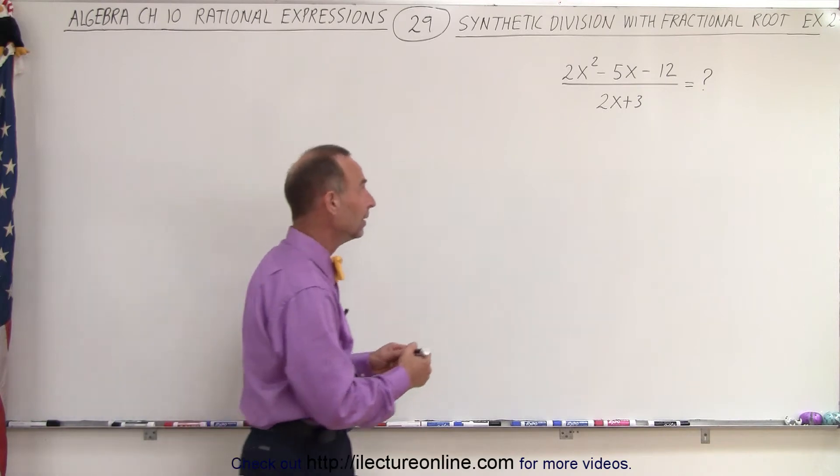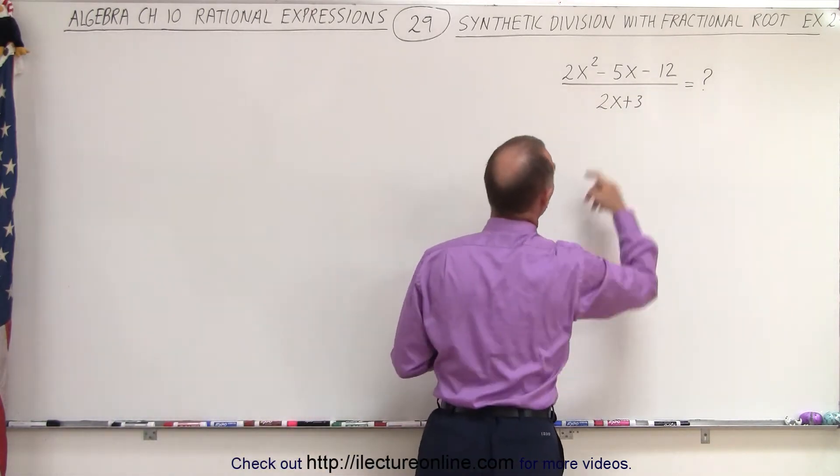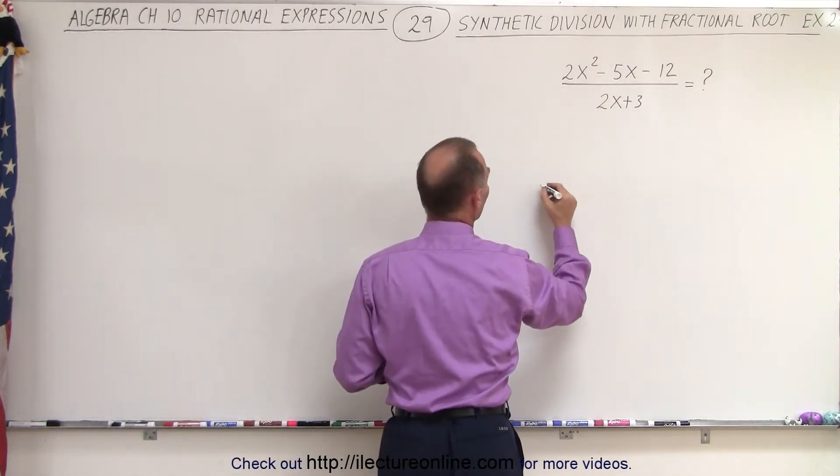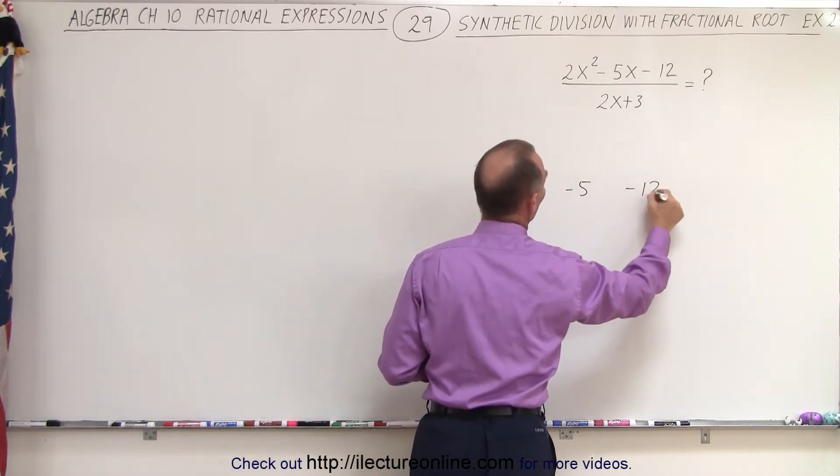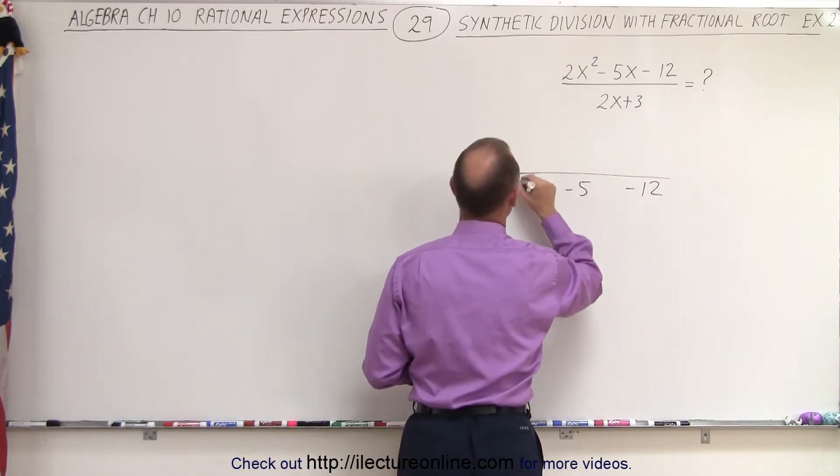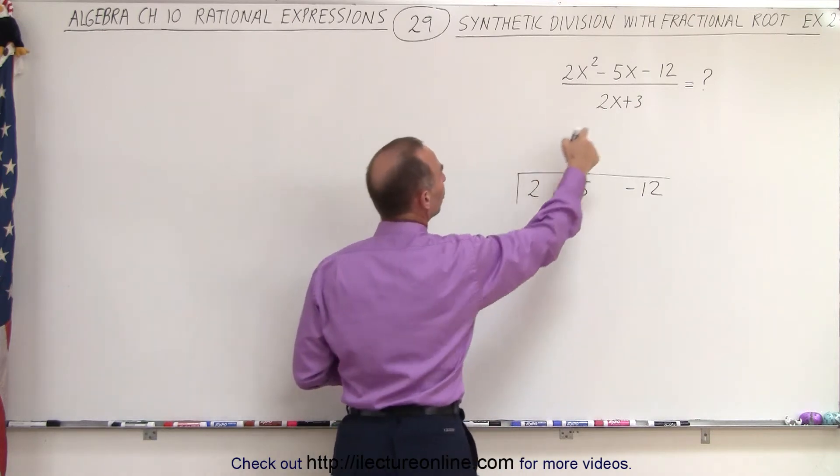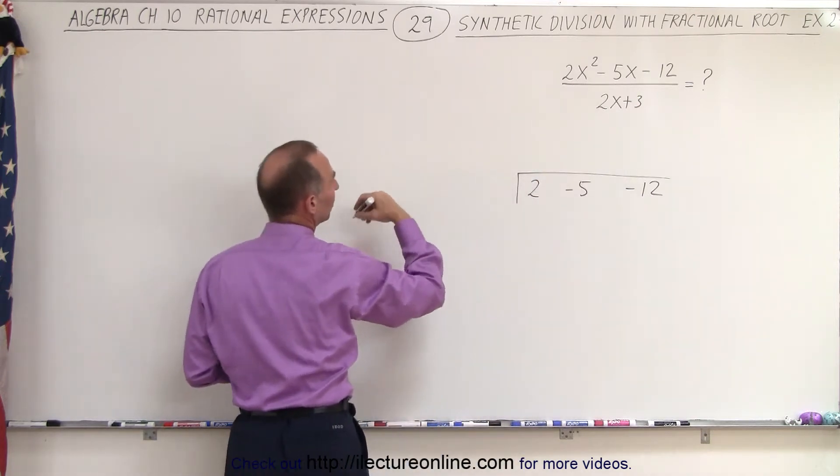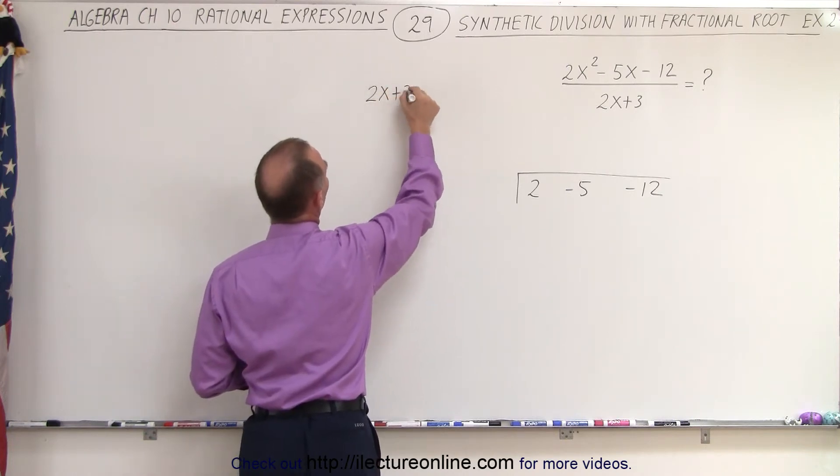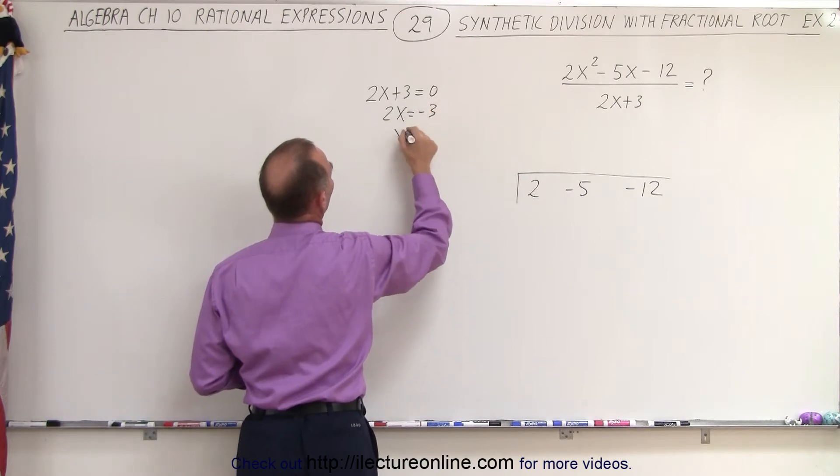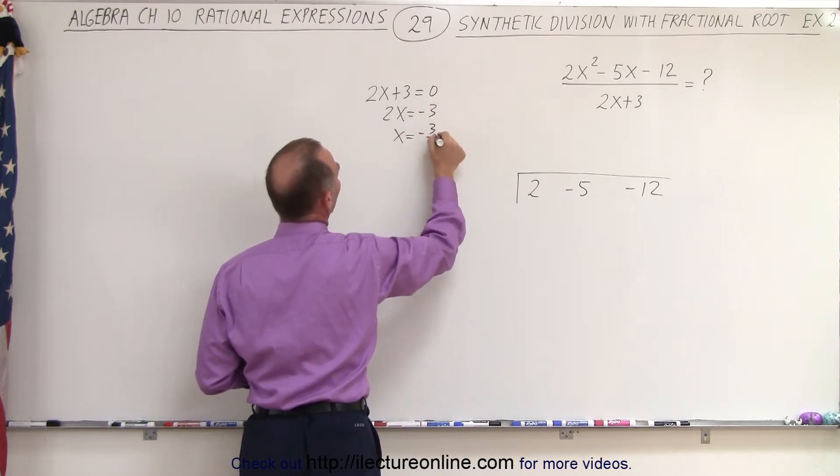How do we do that? Again, we use the numerical coefficients of the numerator. We put those down: 2, minus 5, and minus 12. We draw a line like this. Now here we're going to put in the root made up from the denominator. What makes the denominator equal to 0? So we have 2x plus 3 equals 0, 2x equals minus 3, or x equals minus 3 over 2.